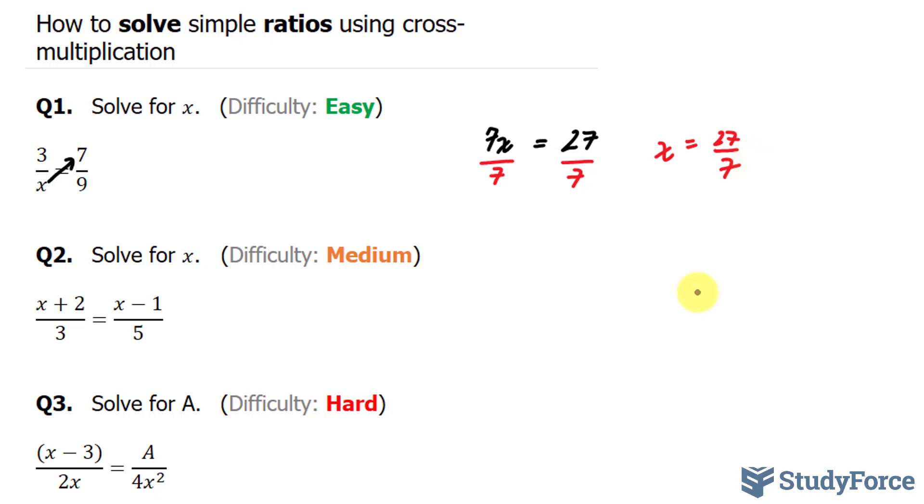Moving on to question two. We're asked to solve for x. We have two x's here. So once again, we'll use cross multiplication. There's a fraction here and a fraction there. 3 times x minus 1 is 3 bracket x minus 1, and 5 times x plus 2 is 5 bracket x plus 2.